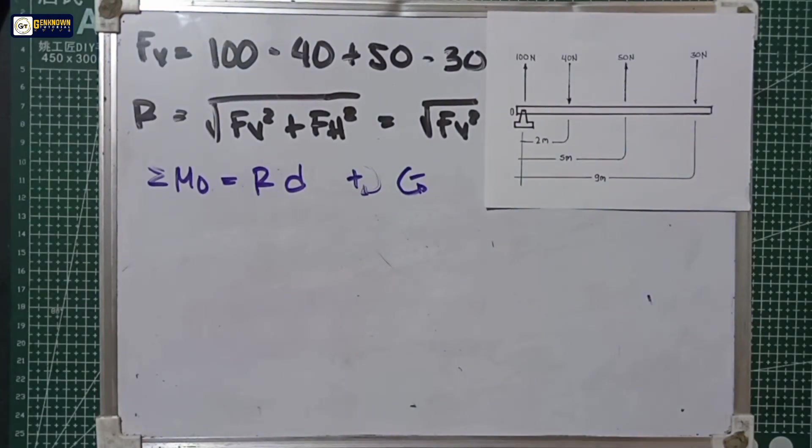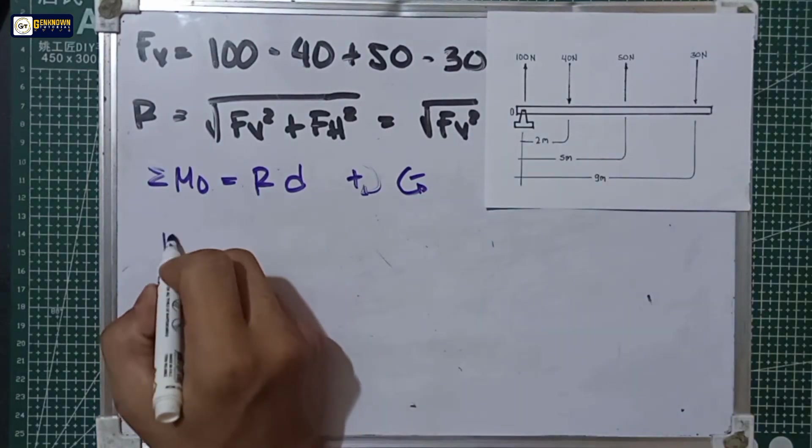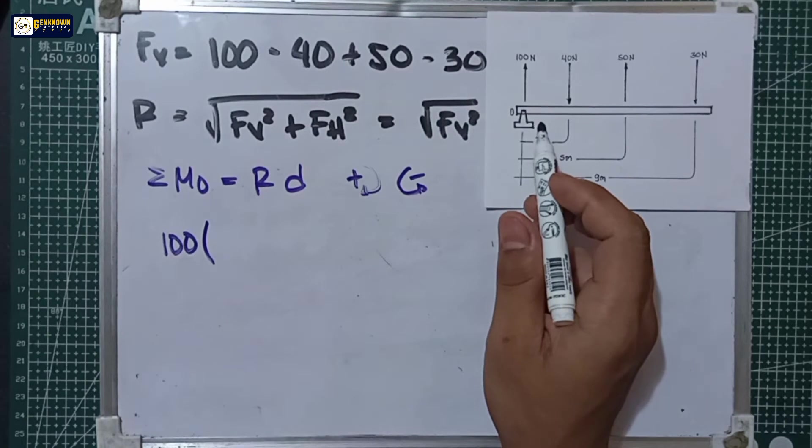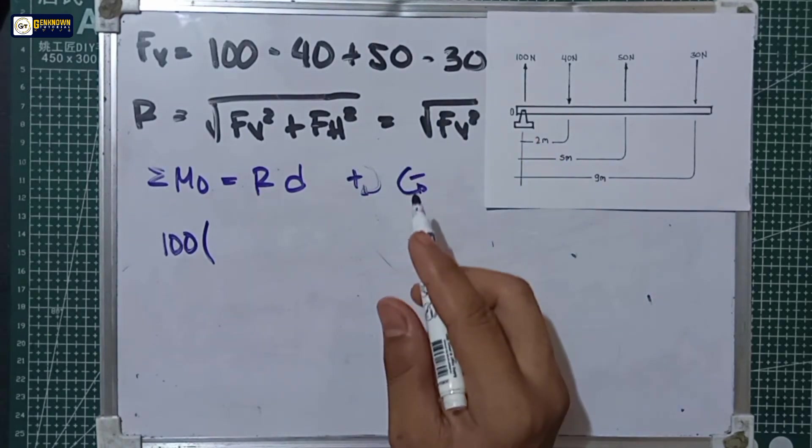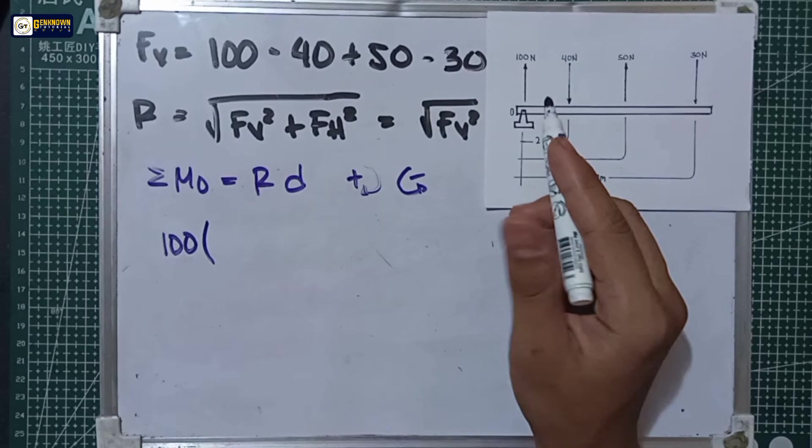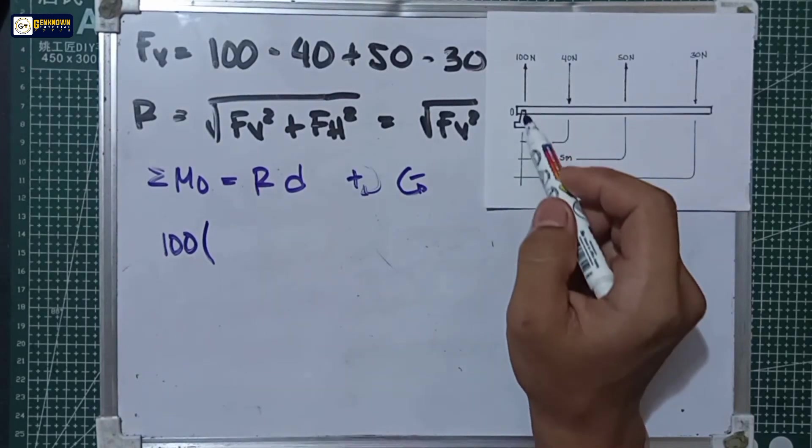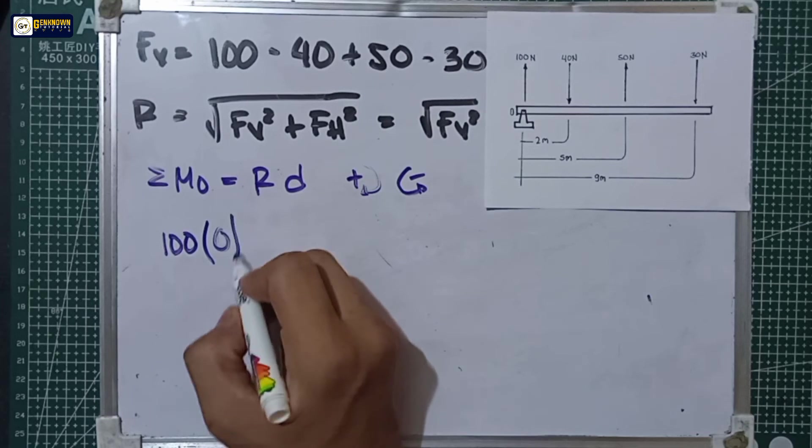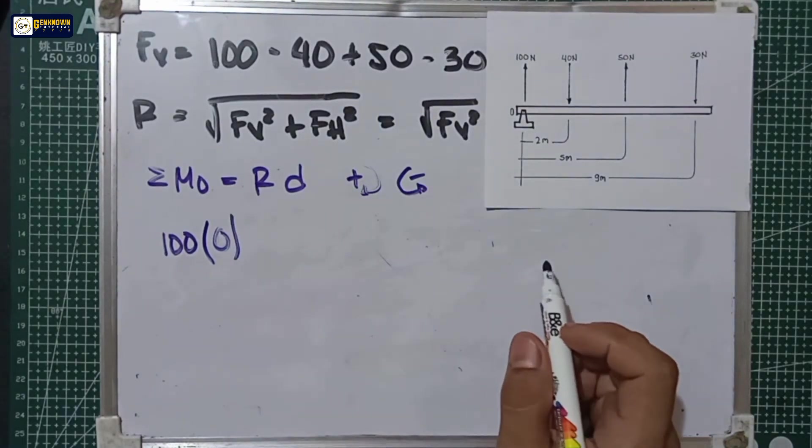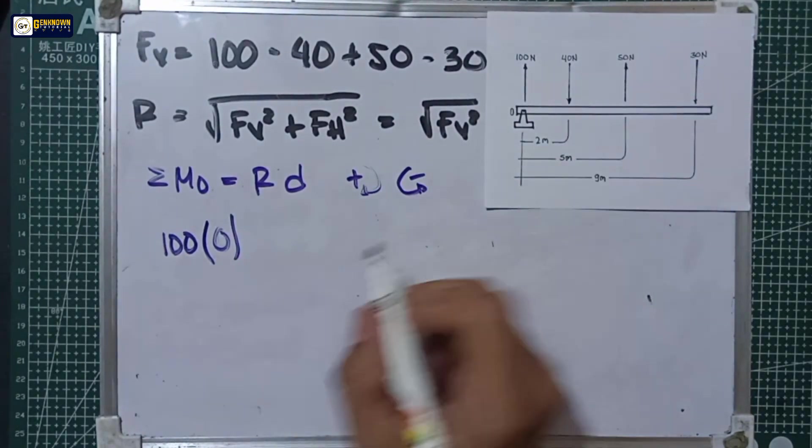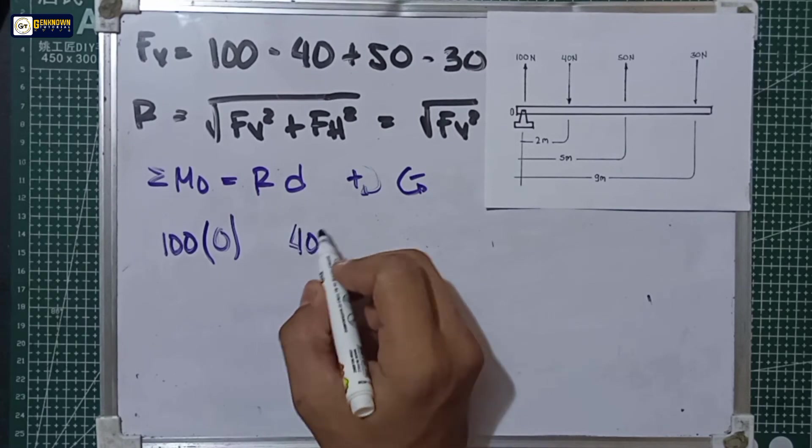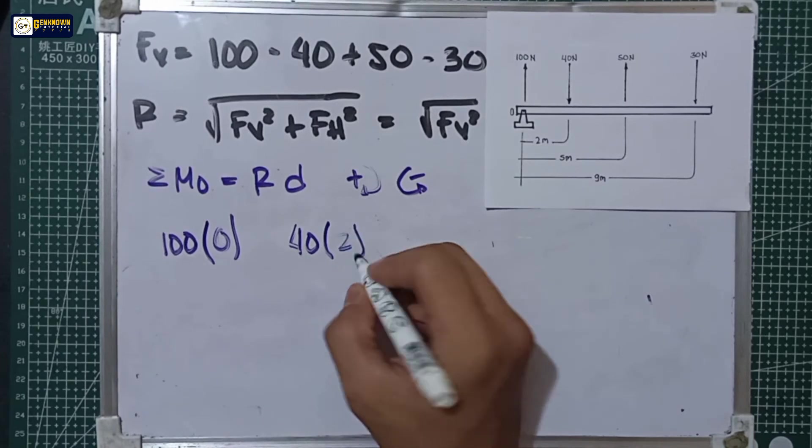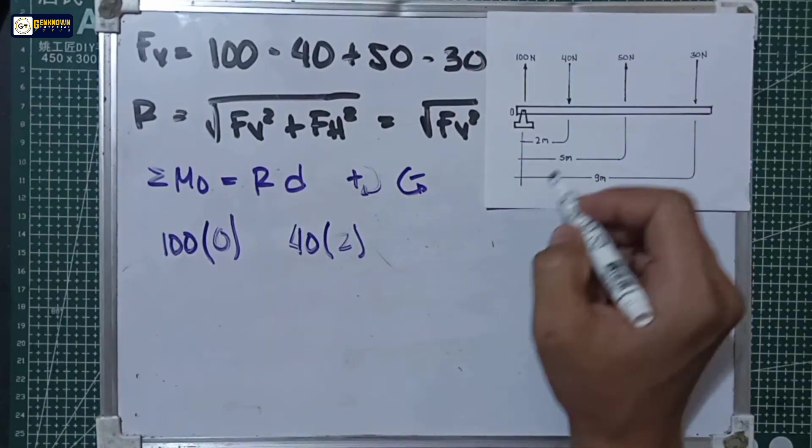For the 100 newtons, multiply by the distance. The distance is from the force to the point we're taking moments about. For 100 newtons, it's zero because it's directly at the point. We have also 40 newtons. The distance is 2 meters. For the sign, it rotates clockwise, so positive.